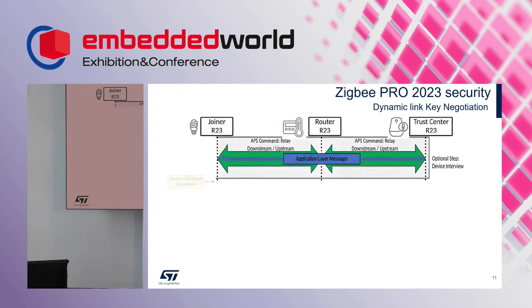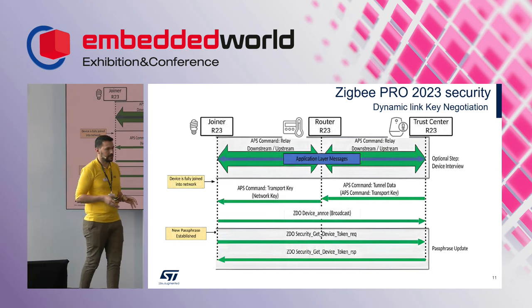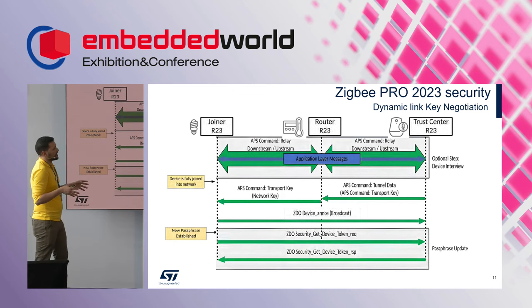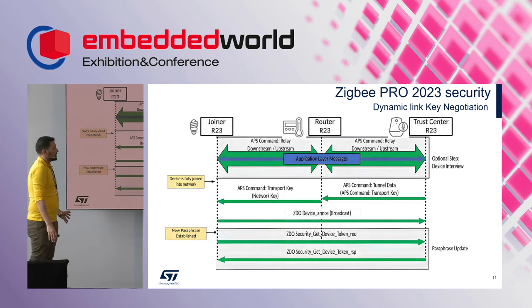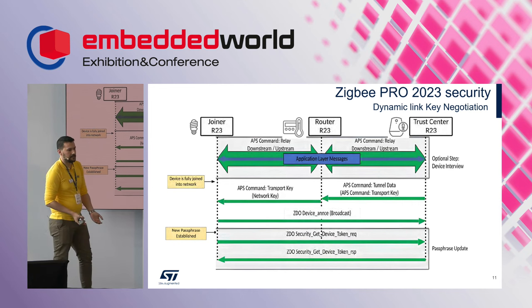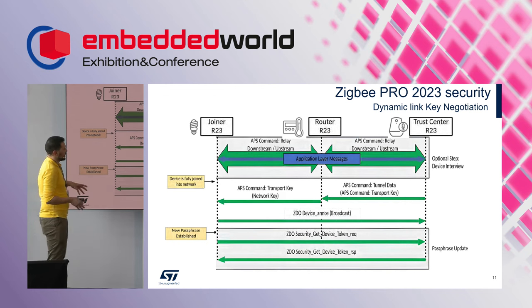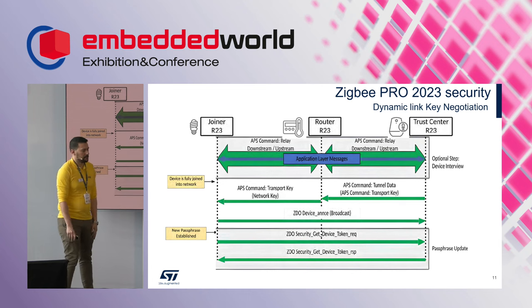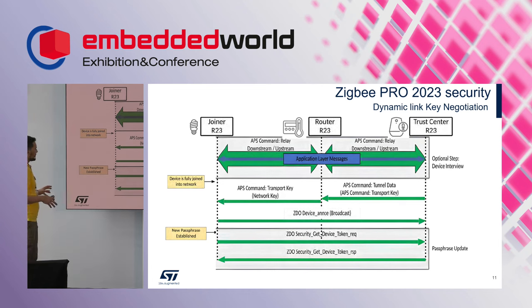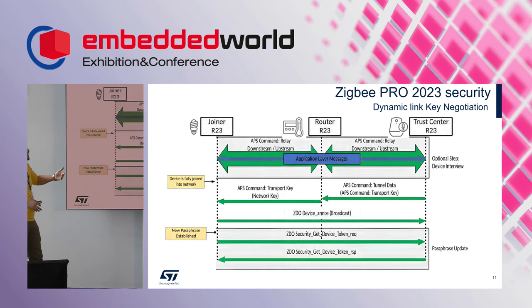After that, there is a new device interview stage where APS data is encrypted with the newly derived link key. The trust center and joiner determine if they meet the requirements to join the network by checking supported clusters, attributes, etc. Once everything is confirmed, the trust center sends the network key encrypted with the derived link key to the joiner. The joiner is now fully operational and broadcasts a device announcement packet. There is also a passphrase update step — a token used for subsequent DLK sessions.